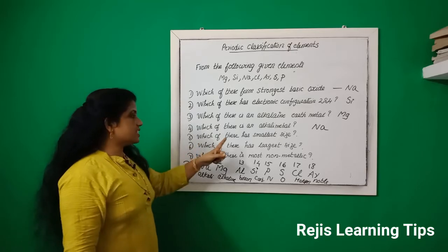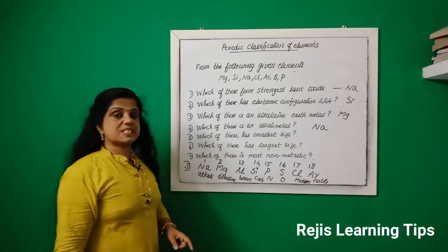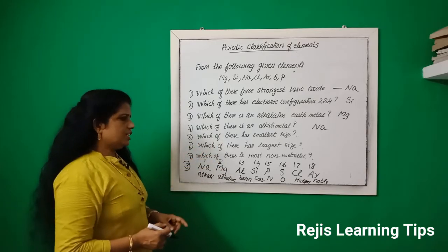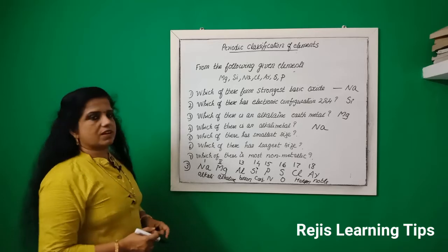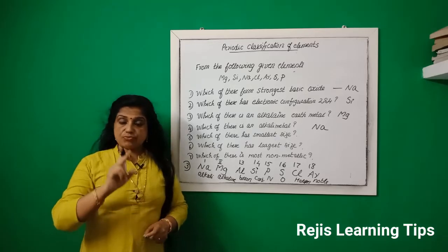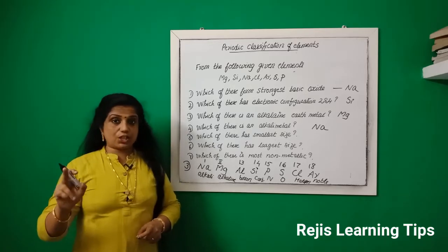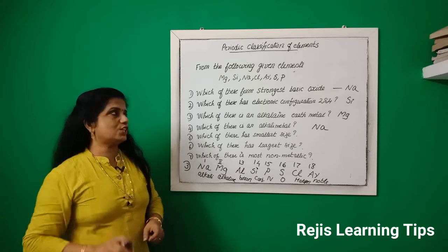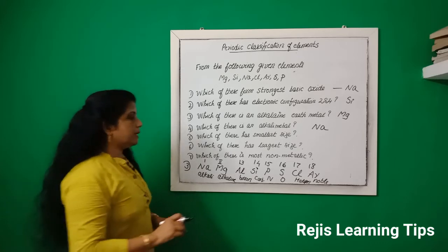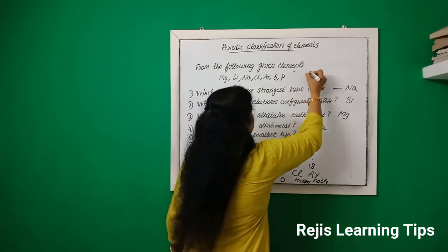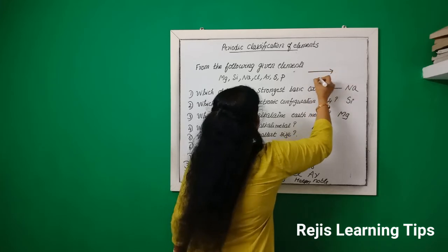Which of these has the smallest size? In a period, from left to right, the atomic size decreases. That is the period trend — going left to right, atomic size decreases.